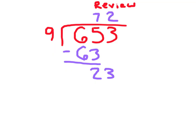Next step is to multiply. 2 times 9 is 18, and 23 minus 18 is 5. No more numbers to bring down, so this 5 is our remainder. Remember, the remainder can never be bigger than the divisor.